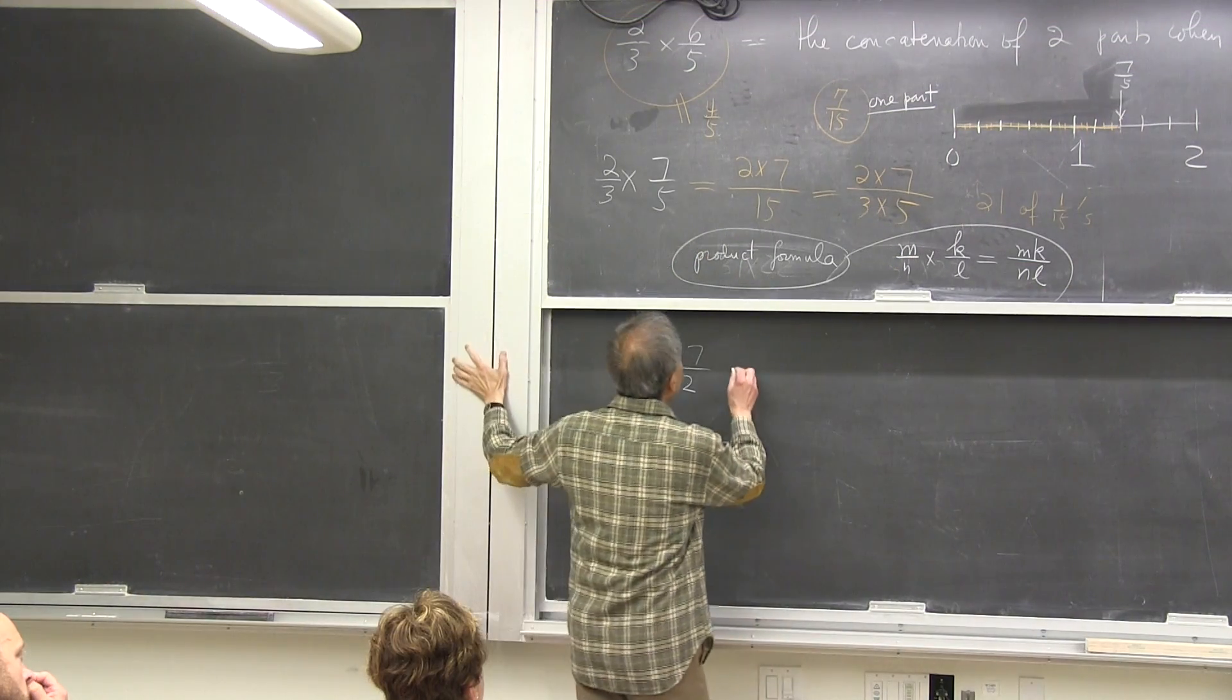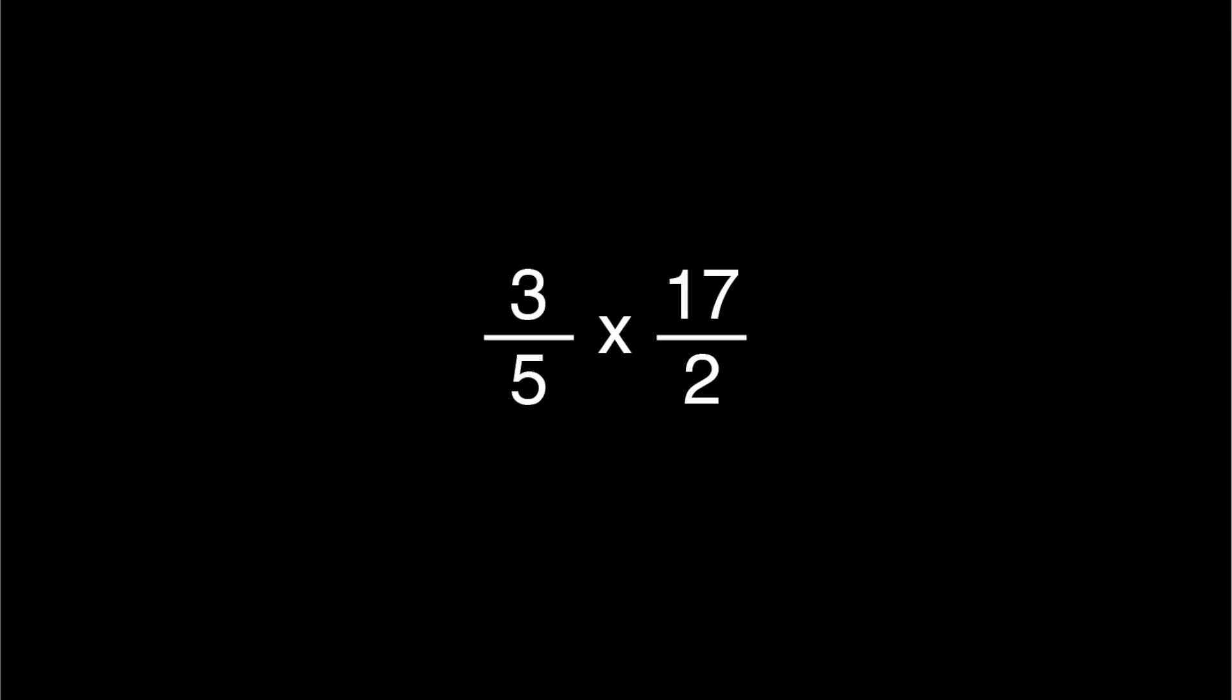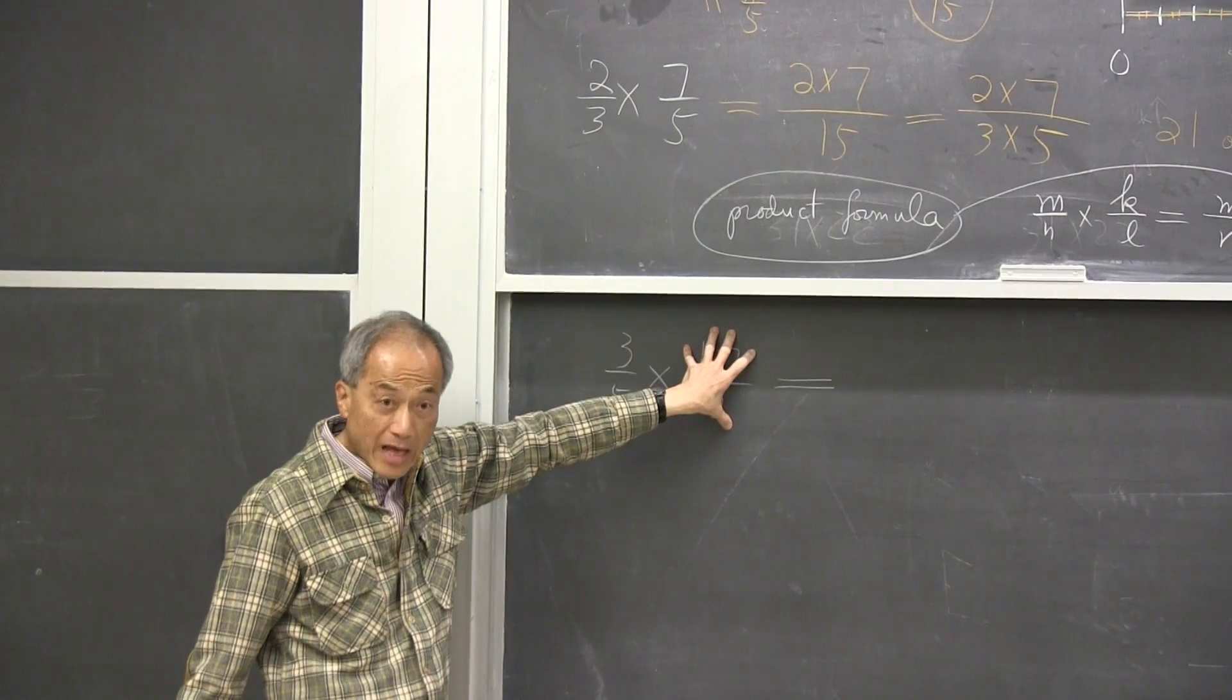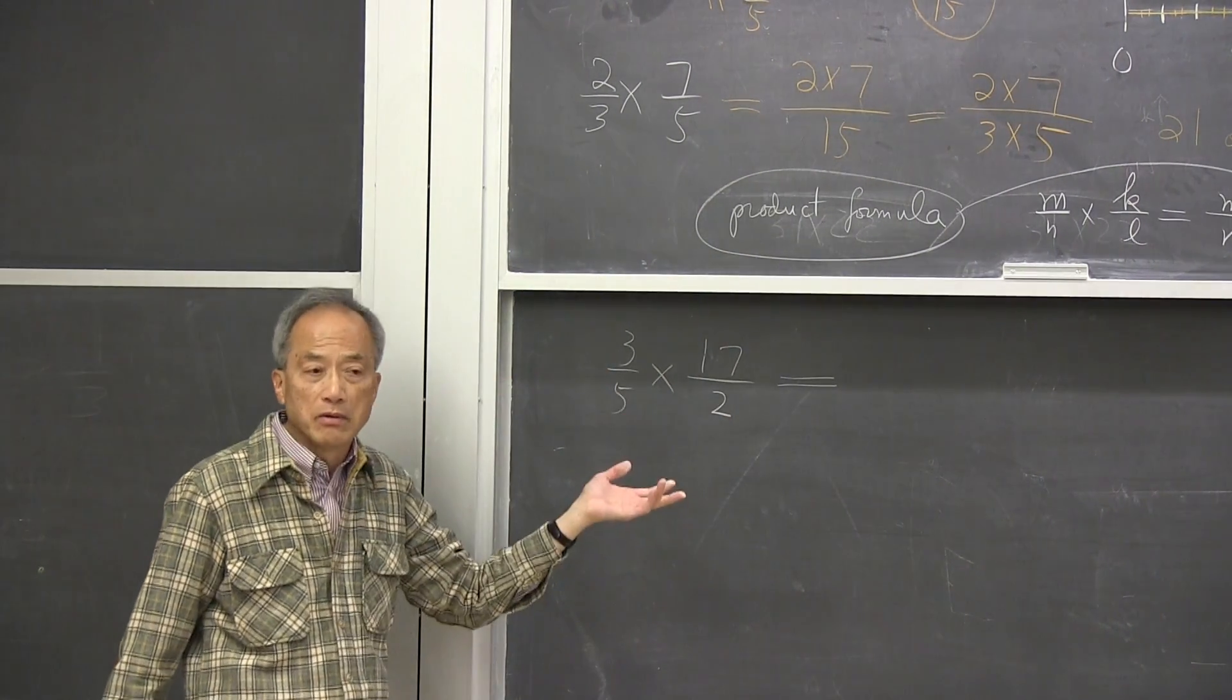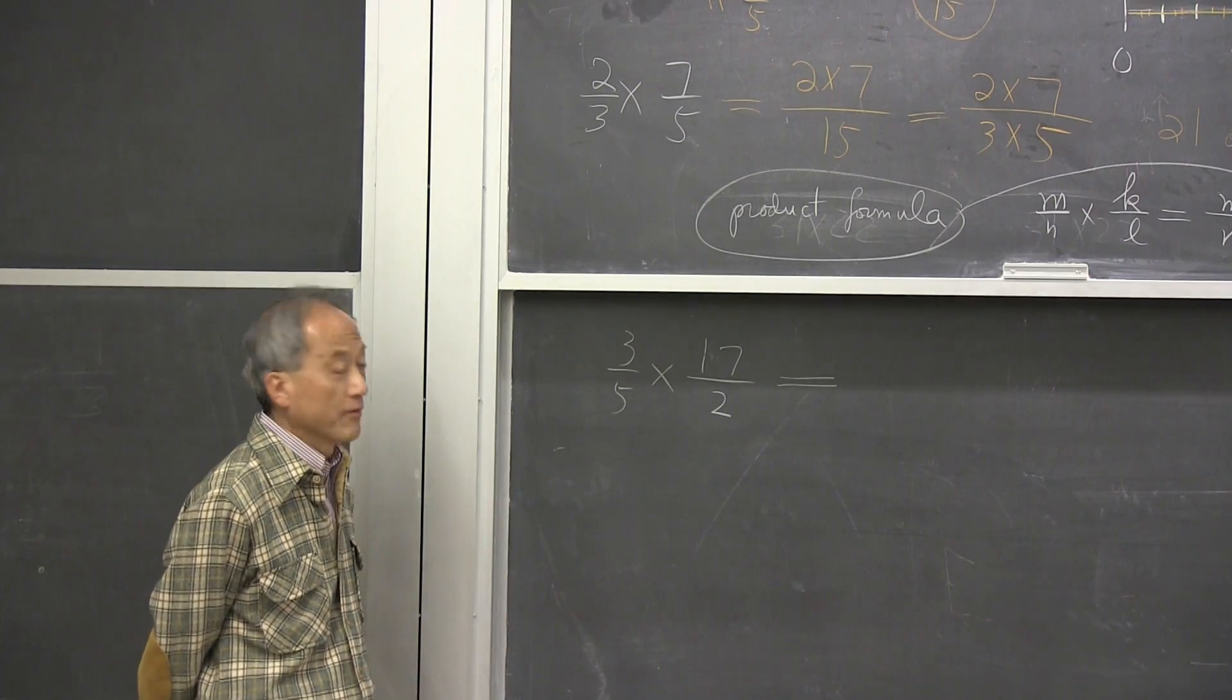51 tenths? No, I mean, how do you think about it? So now, I'm forced to turn the partition that much into five equal parts. Yeah, and take three of them. And take three of them, right.